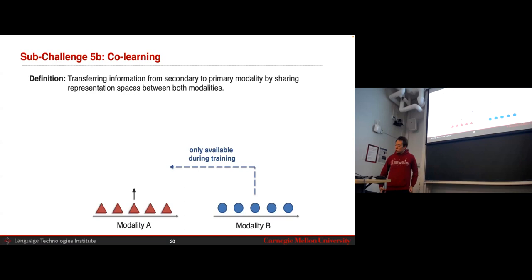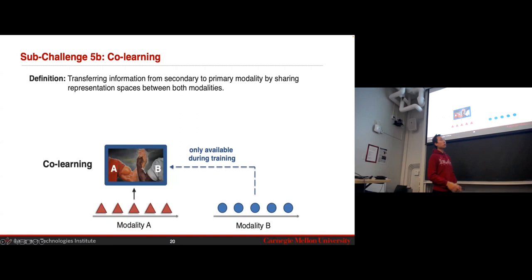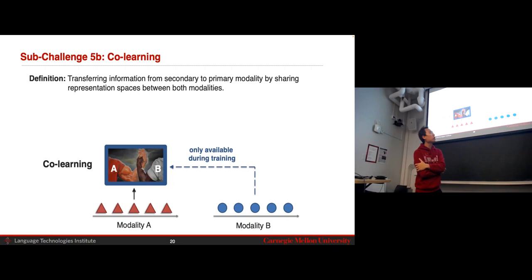We've seen previously in coordination how learning coordinated representations allows retrieval and related tasks; we'll see quickly how that's useful for transference as well. In co-learning, it's not so much about transfer from one modality to another, but the goal is to use both modalities to train a single model, after which you discard the modality you don't care about. Modality A is what you care about; Modality B is auxiliary, used during training with a dashed arrow — at test time, you throw it away.